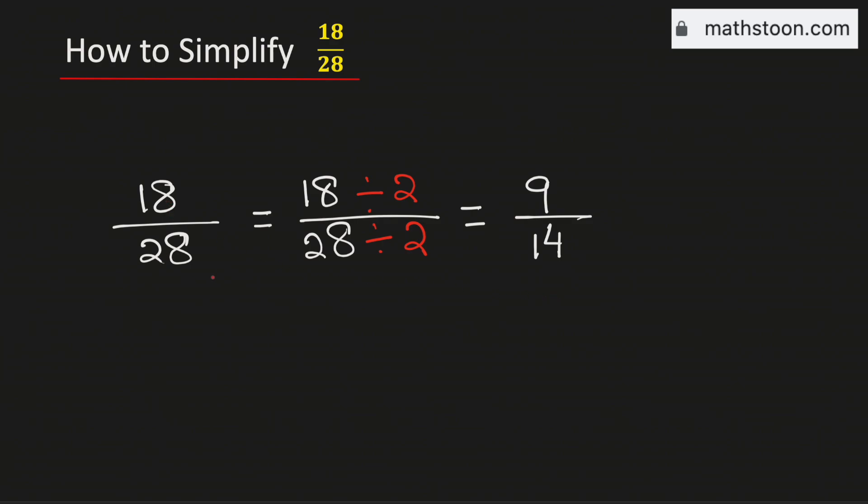So 18 over 28 simplified equals 9 over 14, and this is our final answer. Thank you for watching. Please like, share, and comment on the video. Also subscribe to the channel.